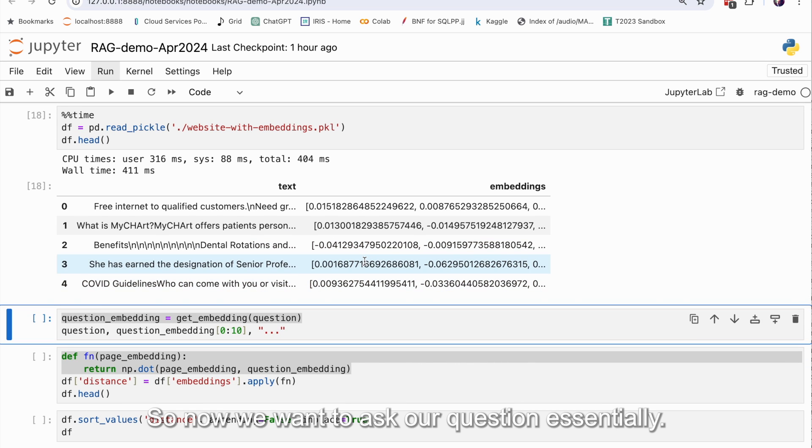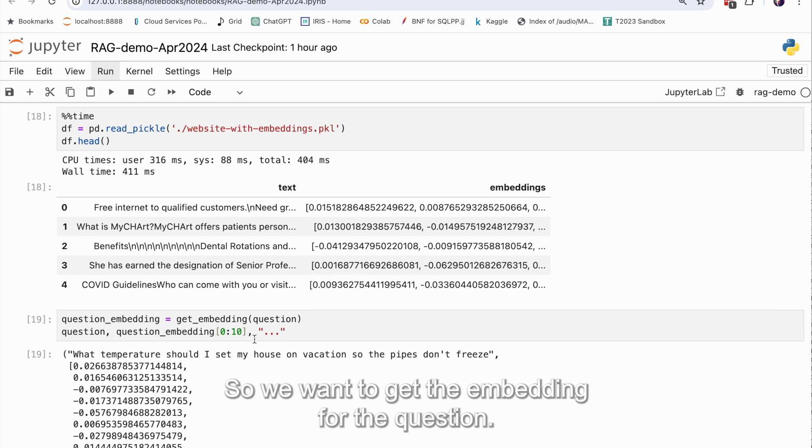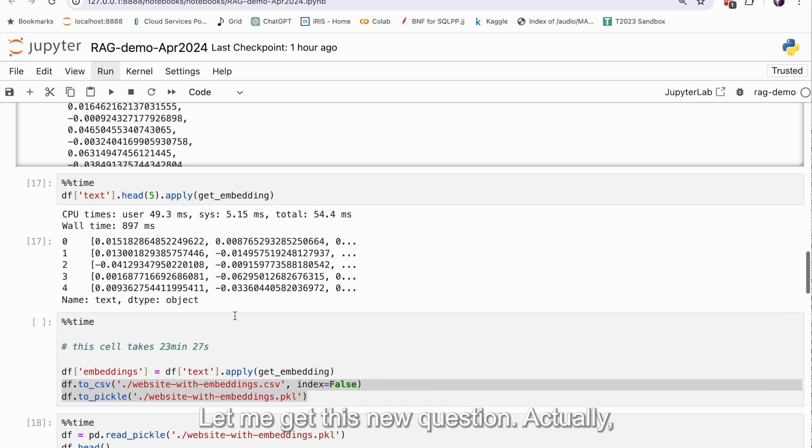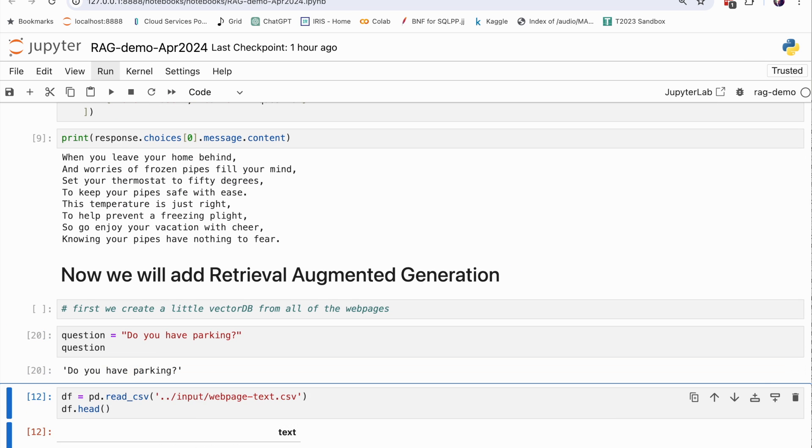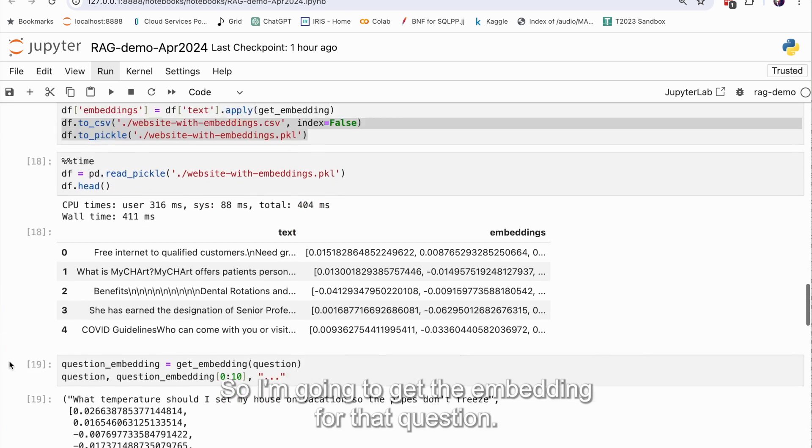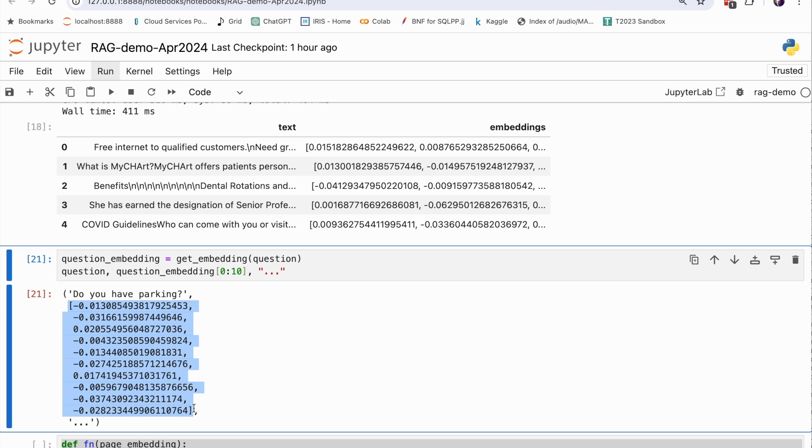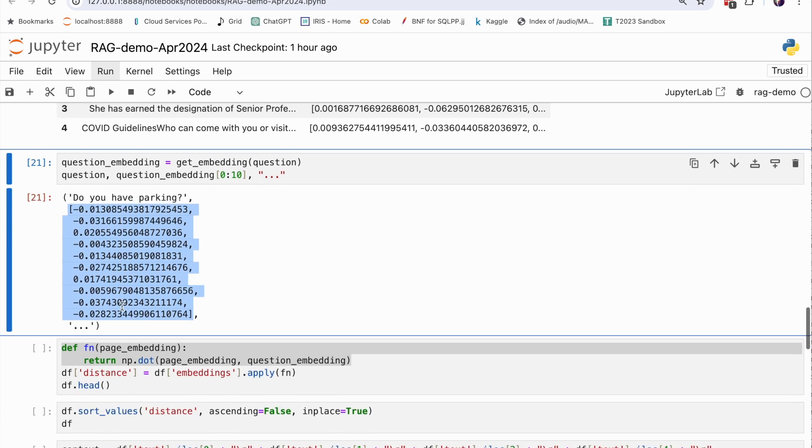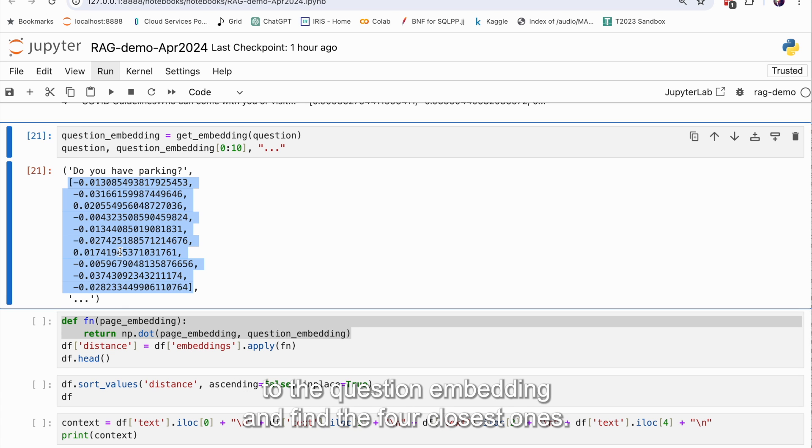So now, basically, we want to ask our question, essentially. So we want to get the embedding for the question. Let me get this new question. A new question is, do you have parking? So I'm going to get the embedding for that question. Do you have parking? And this is the first 10 floats of that 1500 number of embedding. And so now we want to compare each of the pages to the question embedding and find the four closest ones.